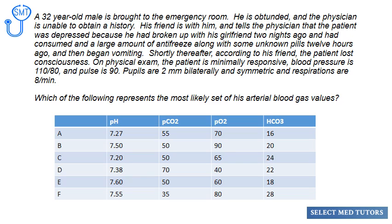This kind of USMLE question can seem daunting at first, but if we use a systematic, stepwise approach, we can tackle problems as seemingly complex as this one. Step one: always read the question at the end of the vignette first so that you are sure what is being asked. Notice that this is an acid-base question. Step two: now let's look at some of the keywords in the vignette that may help us arrive at the correct answer.